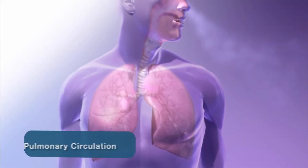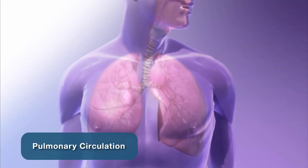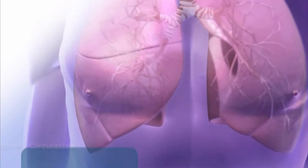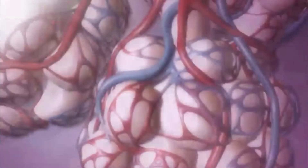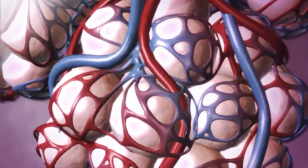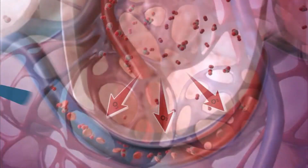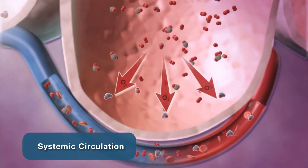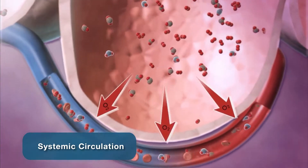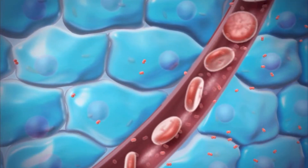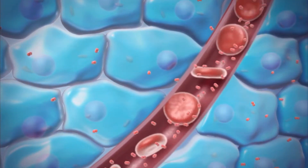Pulmonary circulation facilitates the process of external respiration. It absorbs oxygen from the tiny air sacs called the alveoli and releases carbon dioxide to be exhaled. Systemic circulation facilitates internal respiration, where the blood diffuses oxygen into cells and absorbs carbon dioxide.